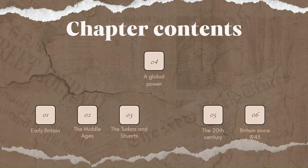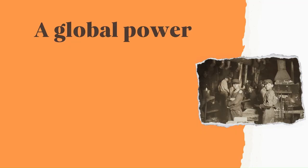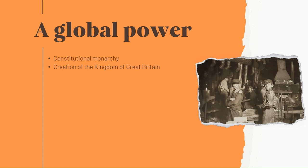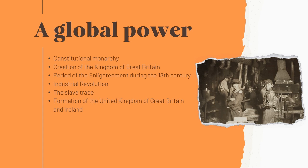Chapter 3, Part 4: A Global Power. In this section: constitutional monarchy, the creation of the Kingdom of Great Britain, the period of Enlightenment during the 18th century, the Industrial Revolution, the slave trade, formation of the United Kingdom of Great Britain and Ireland, wars with France and the Crimean War, and democracy.